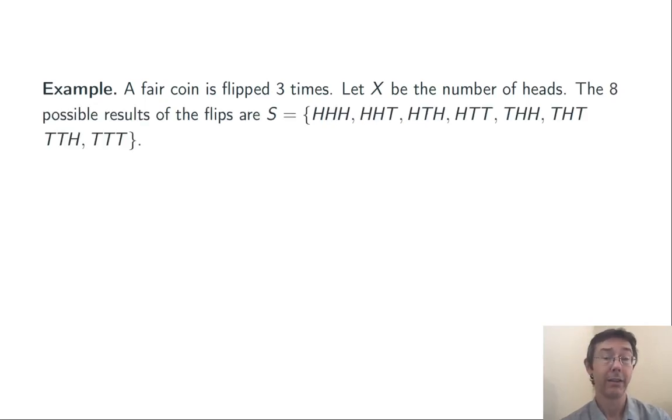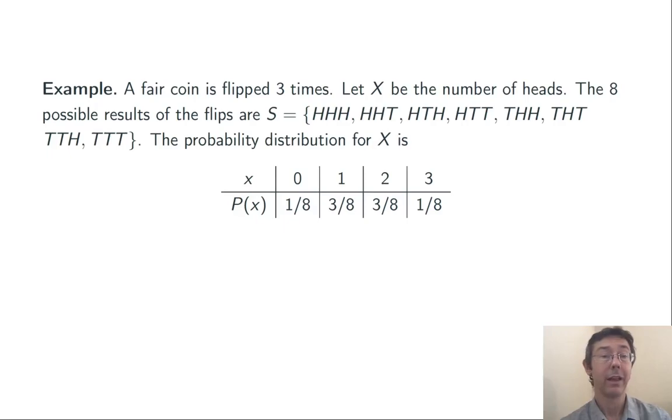Let's compute this directly. The sample space consists of eight possible outcomes, things like heads, heads, heads, and heads, heads, tails. So looking at this, we see that there is exactly one outcome out of the eight where we have zero heads, three outcomes where we have one head, three outcomes where we have two heads, and one outcome where we have three heads. So we get this discrete probability distribution. This is b(3, 0.5).